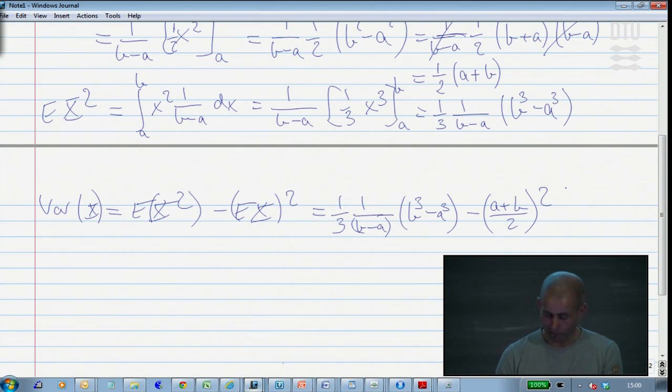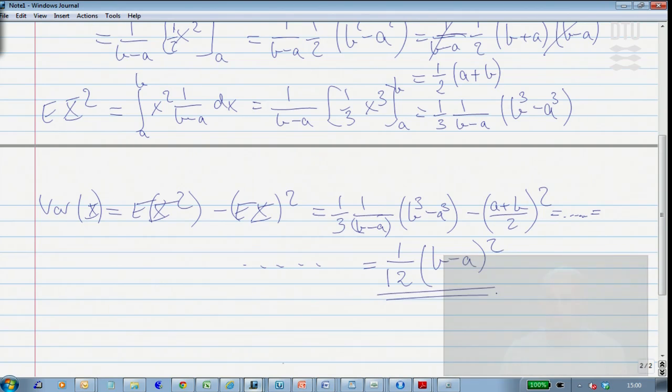And then finally, we would need some simplification of this, which I'm not going to stand here and go through, it's a little bit boring, but actually if we do some steps here, finally we achieve the simplified expression of 1 over 12 times b minus a squared, which is the variance of the uniform.